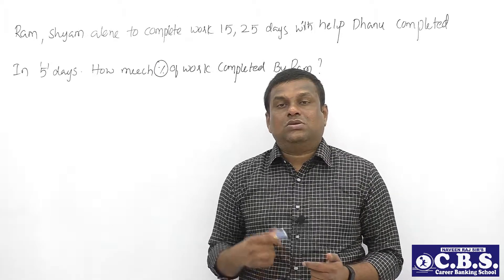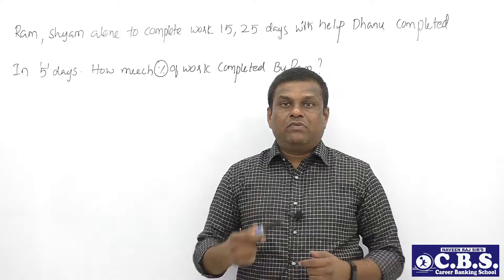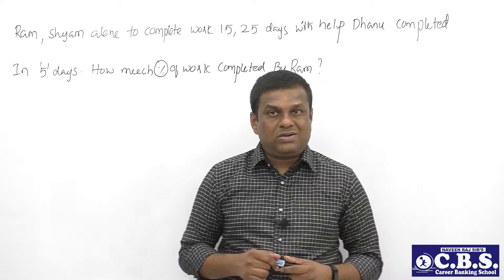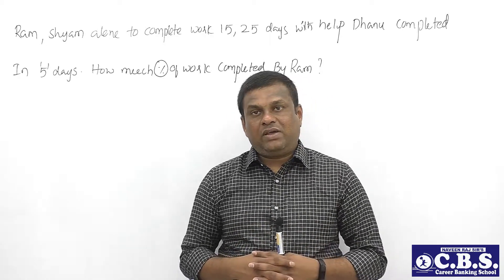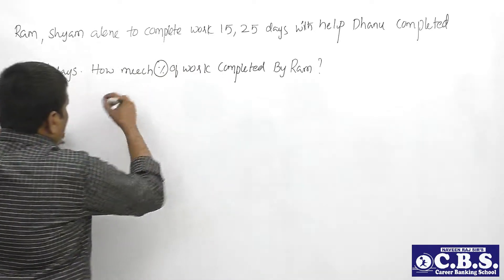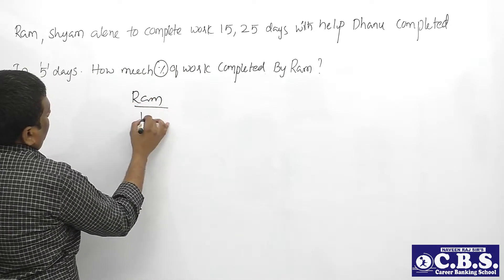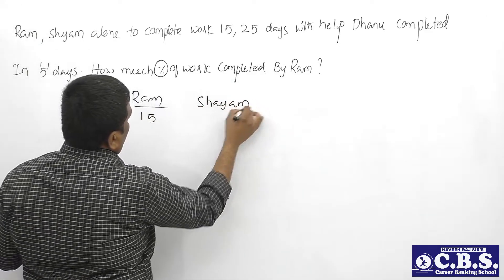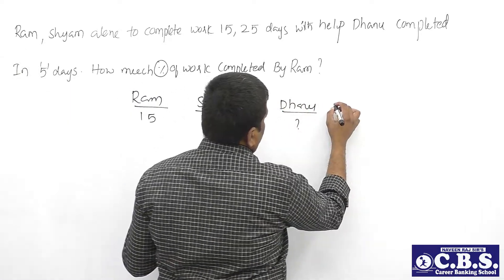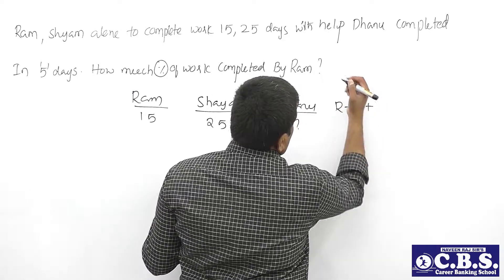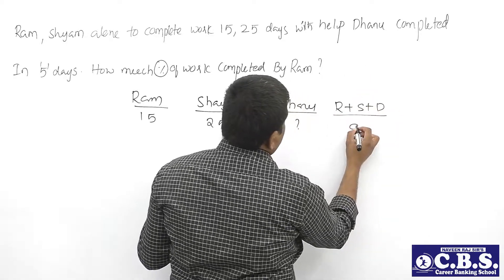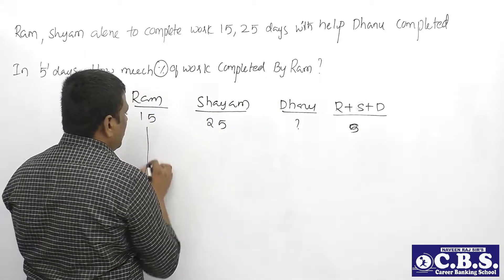Let's discuss the next question: Ram and Shama complete work in 15 and 25 days respectively. With the help of Danu, they complete the work in 5 days. How much percent of work is completed by Ram? Percent of work means we need to find efficiency. Ram takes 15 days, Shama takes 25 days, and Ram + Shama + Danu together complete in 5 days. LCM of 15, 25, and 5 is 75.